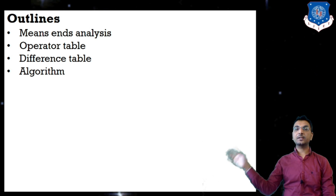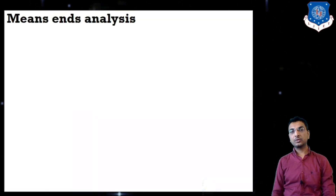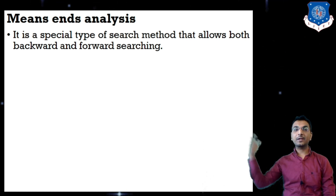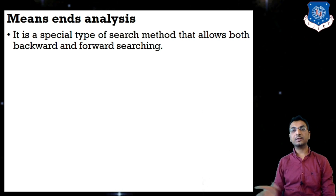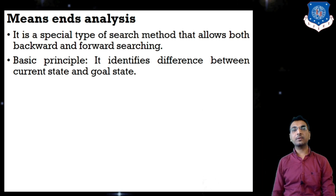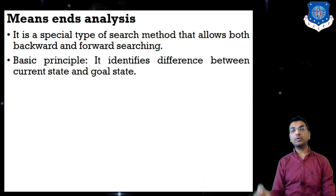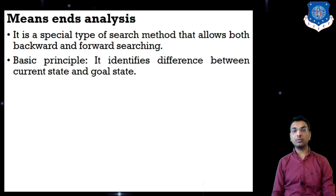Let us understand first what is the meaning of Means-Ends Analysis. In Means-Ends Analysis we have both backward and forward searching techniques, meaning we can move from initial state to goal state or from goal state to initial state. The basic principle is that it identifies the difference between the current state and goal state. According to that difference, we execute one particular operator — which operator is selected will be based on the difference between current state and goal state.